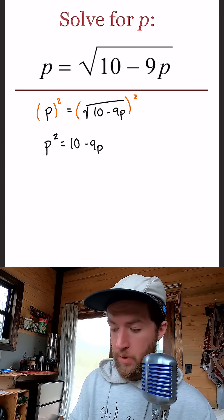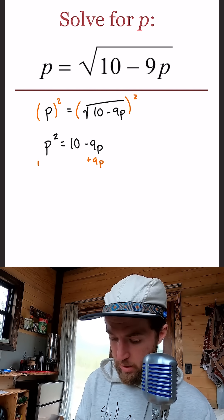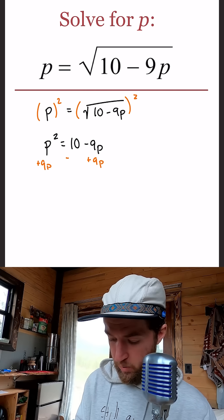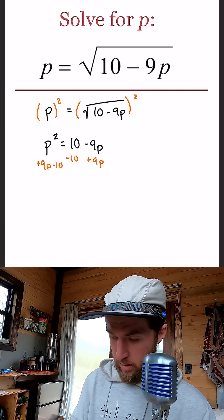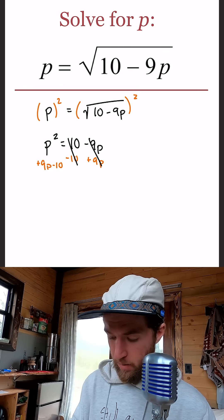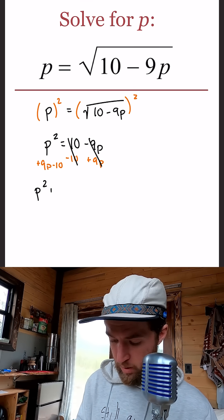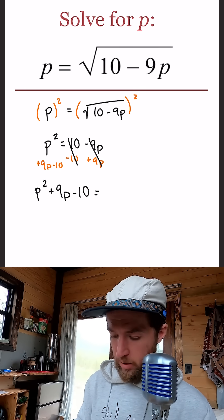Okay, now let's get everything to one side. So we'll add 9P to both sides and we'll subtract 10 from both sides. Okay, and when we do that, we cancel everything on the right and we're left with P squared plus 9P minus 10 equals zero.